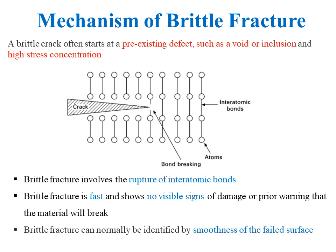Fully brittle fracture involves the rupture of interatomic bonds ahead of the crack, as illustrated in the schematic. This produces a fracture surface called cleavage fracture. A cleavage crack grows between atomic planes along a specific crystallographic direction that has the lowest atomic bond length. Brittle fracture is the worst type of failure because it is fast and shows no visible sign of damage or prior warning that the material will break. It can normally be identified by the smoothness of the failed surface.